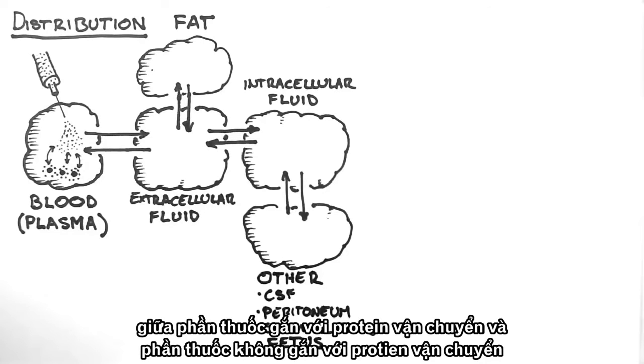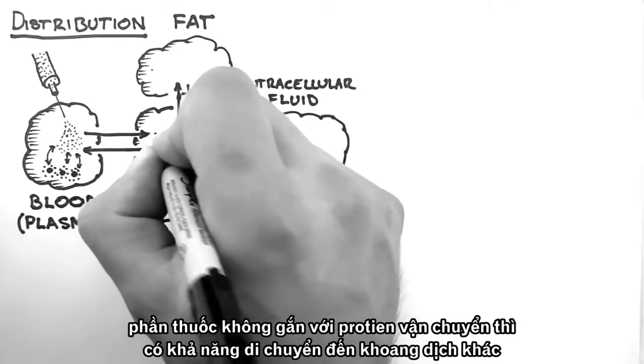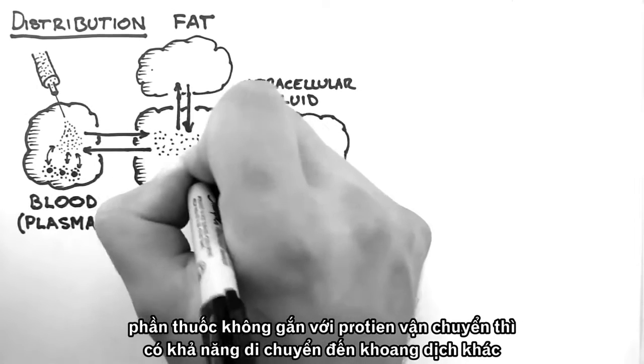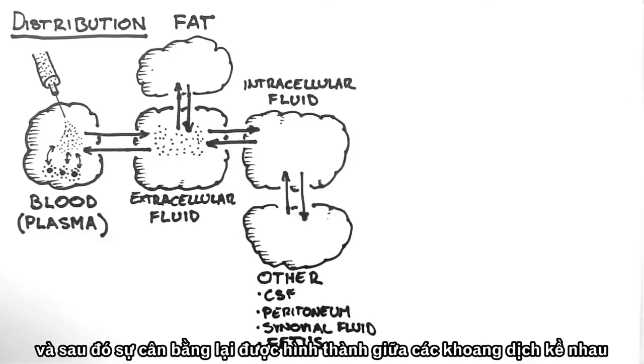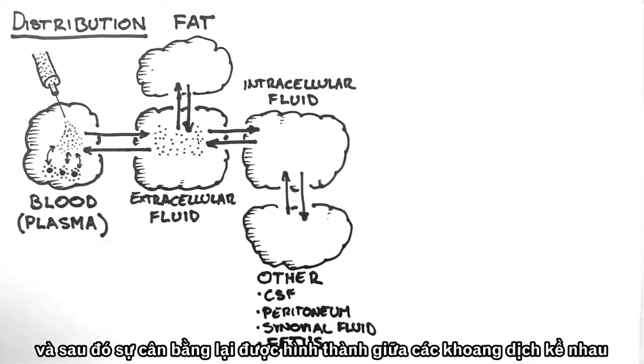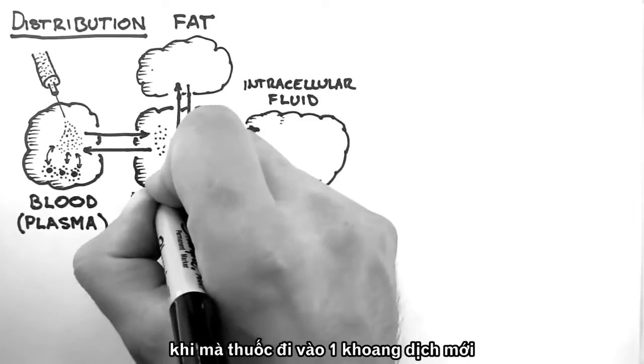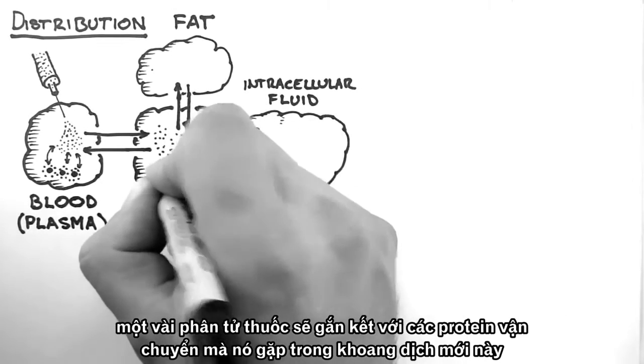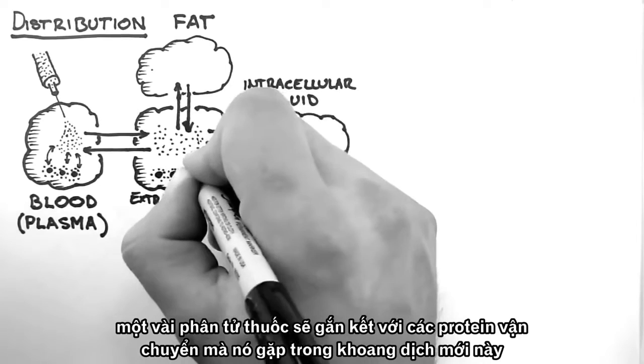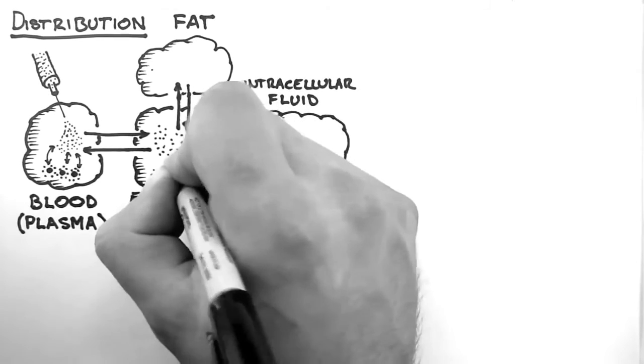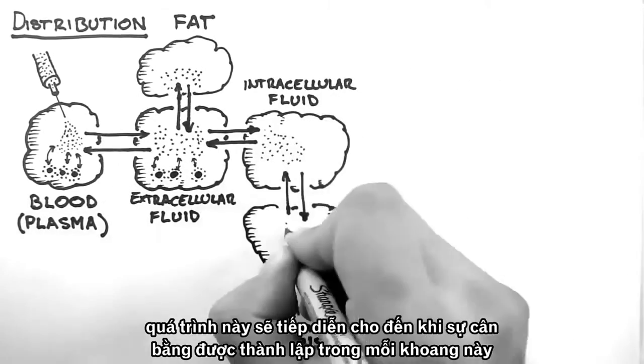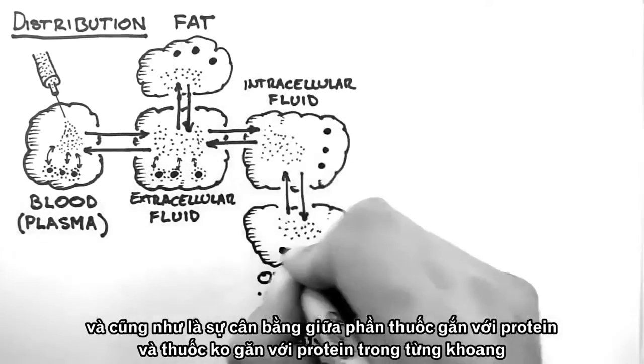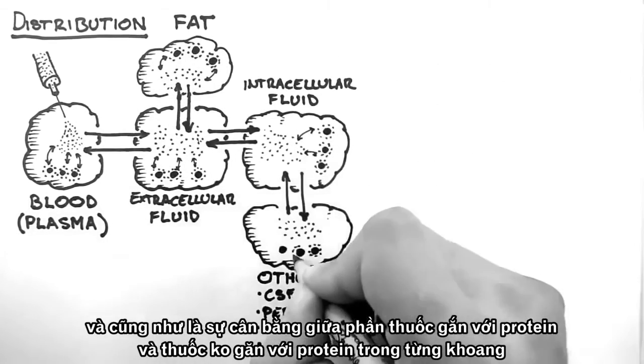There is an equilibrium maintained between the bound drug and the unbound drug. The unbound drug within a compartment is then able to move into a new compartment, and thus an equilibrium is maintained between adjacent compartments. When a drug moves into a new compartment, some of that drug is sequestered by binding molecules within that new compartment. This process continues until there is a balance between each compartment, and a balance between the amount of free drug versus bound drug within each compartment.